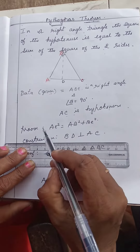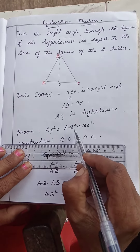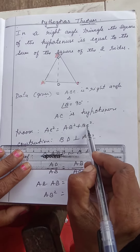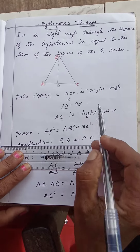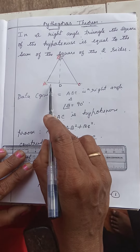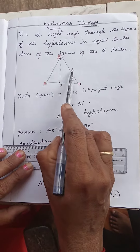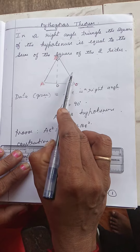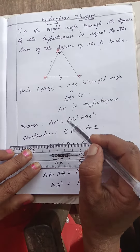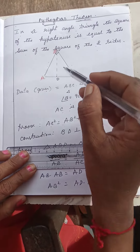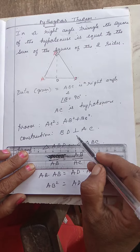Now we have to write the proof. AC square is equal to AB square plus BC square — meaning the square of the hypotenuse is equal to the sum of the squares of the other two sides. To prove this, we have to construct BD perpendicular to AC.